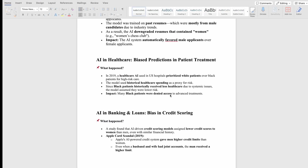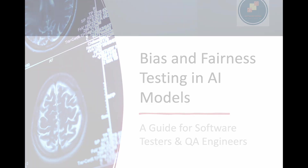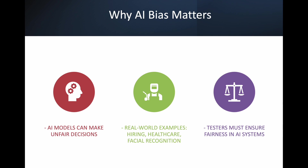Now let's look at our slides on bias and fairness testing in AI models. Why does AI bias matter? A model can make unfair decisions — that's what we saw with the real life examples. It was making unfair decisions and causing issues in real life, impacting society. That's why we should always test for unfair biasness in the model. Testers must ensure fairness in the system.